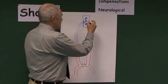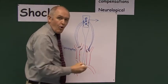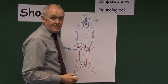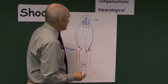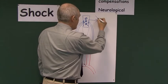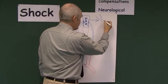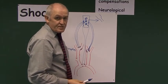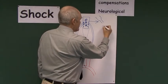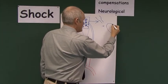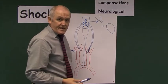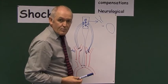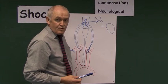When that happens, the medulla oblongata sends out more sympathetic impulses and fewer parasympathetic impulses. The sympathetic impulses cause vasoconstriction — the blood vessels become narrower, which increases peripheral resistance. The sympathetic impulses also act on the heart to increase cardiac output. If blood volume is low and stroke volume cannot be increased, then the heart rate will be increased.